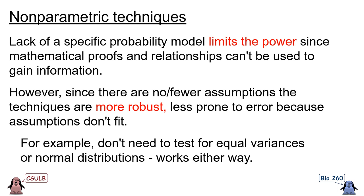For example, with nonparametric techniques, we don't need to worry about populations having equal variances or having normal distributions — the technique will work either way. But obviously, we would not be able to use the mathematical properties of the normal distribution to calculate confidence intervals or something similar to that.